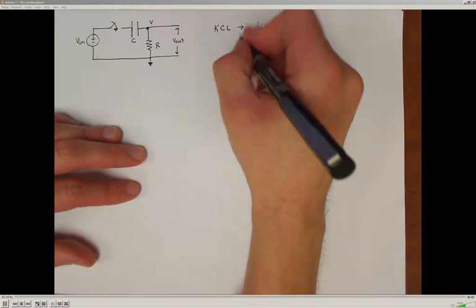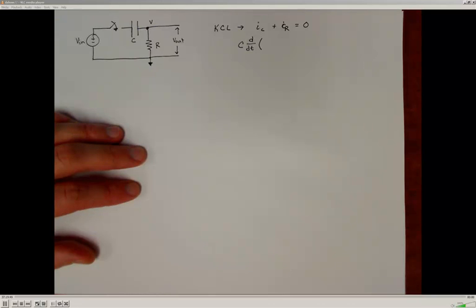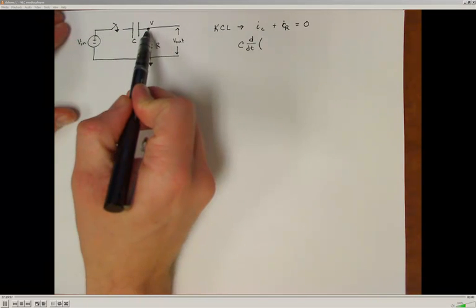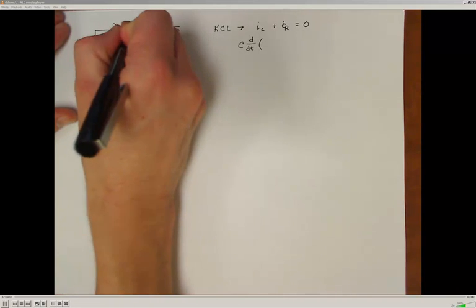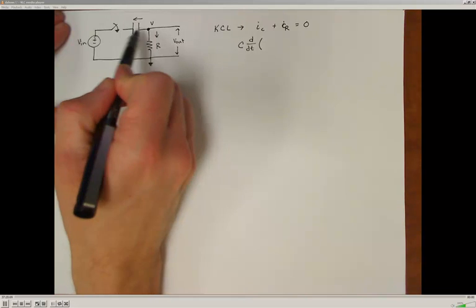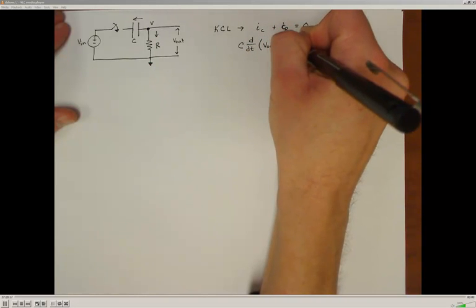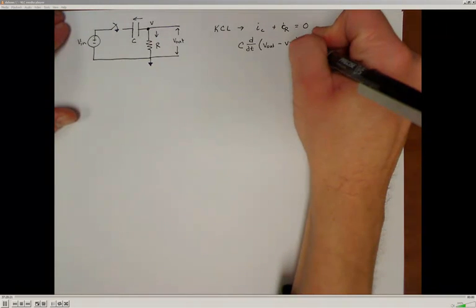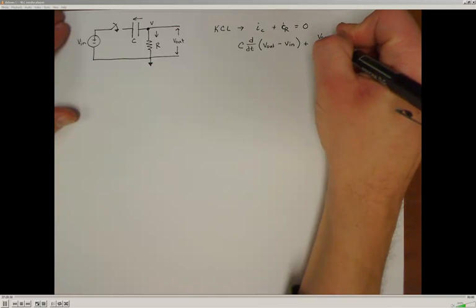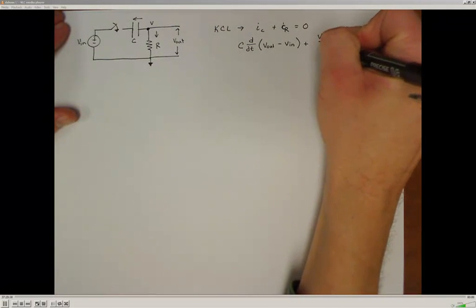For a capacitor, the current-voltage relationship is the capacitance times the rate of change of the potential across the capacitor. Once this switch gets connected and we complete this circuit, the potential across the capacitor is going to be V out minus V in, assuming current is leaving the node and this node is at a higher potential than the input. The current leaving the node through the resistor is going to be the voltage at this node minus zero, divided by the resistance, and that has to sum to zero.